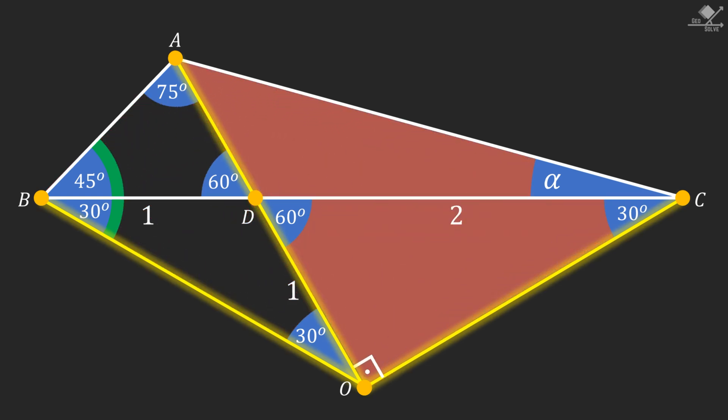Now, focus on this triangle and notice that this is a right-angled isosceles triangle. Therefore, its base angles should be 45 degrees each. And that makes our missing angle alpha 15 degrees.